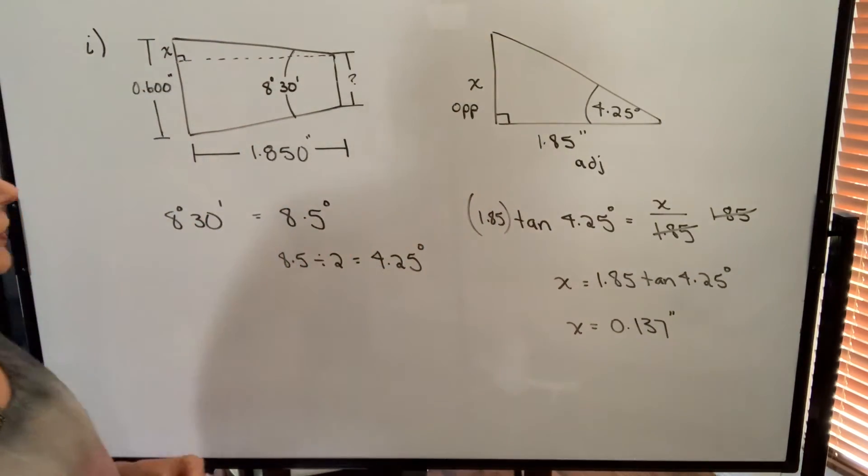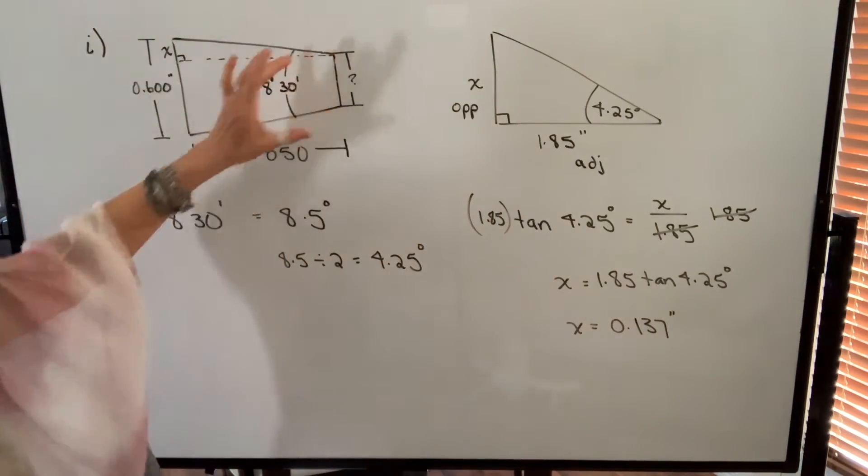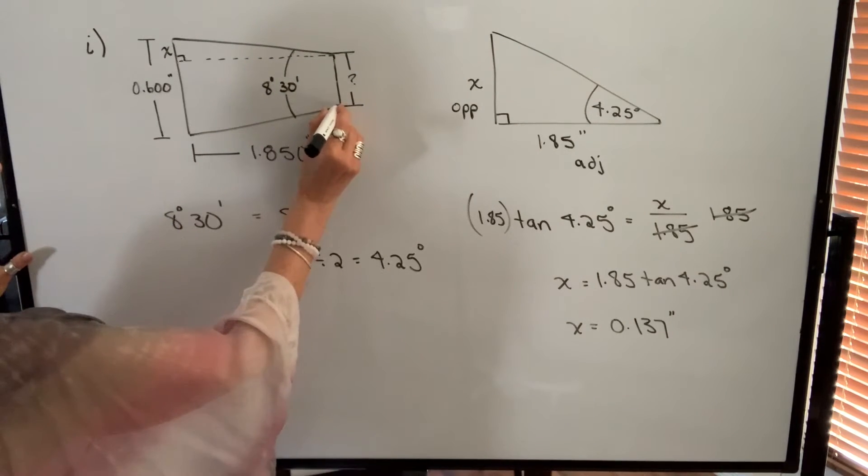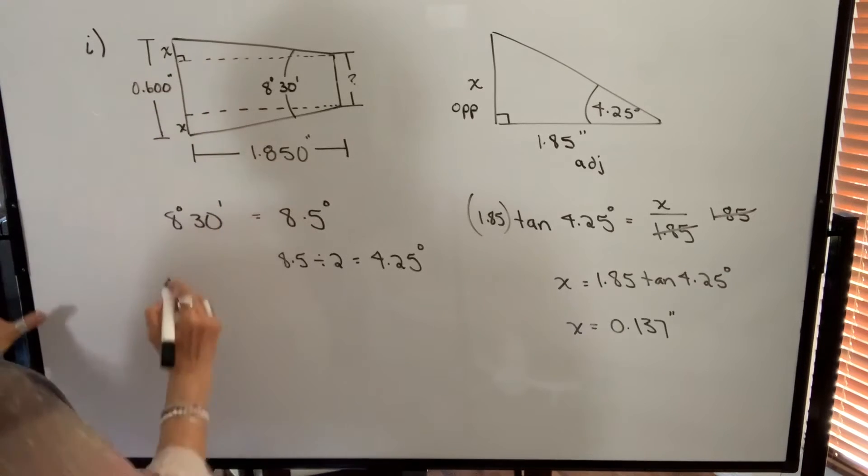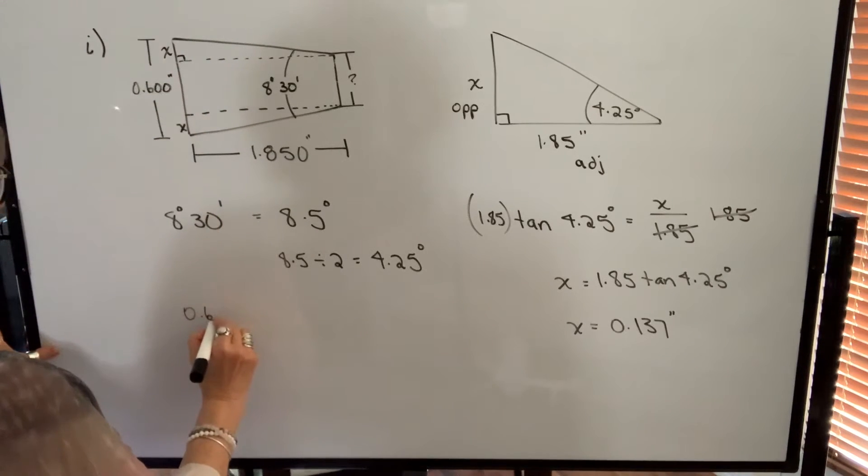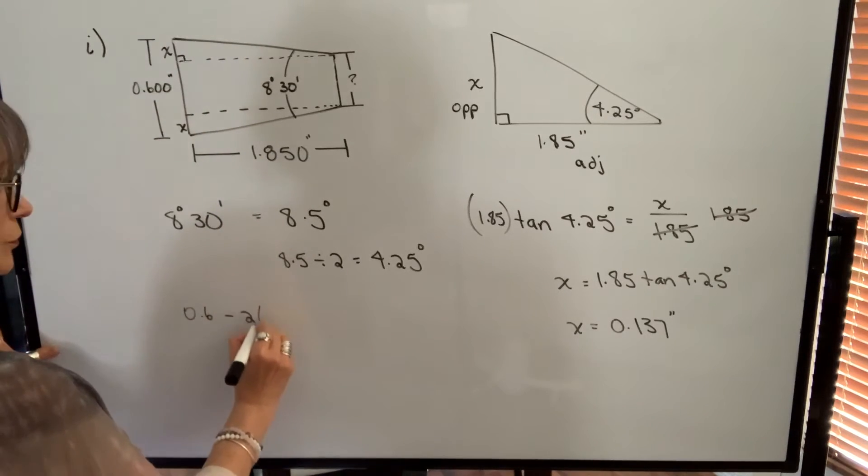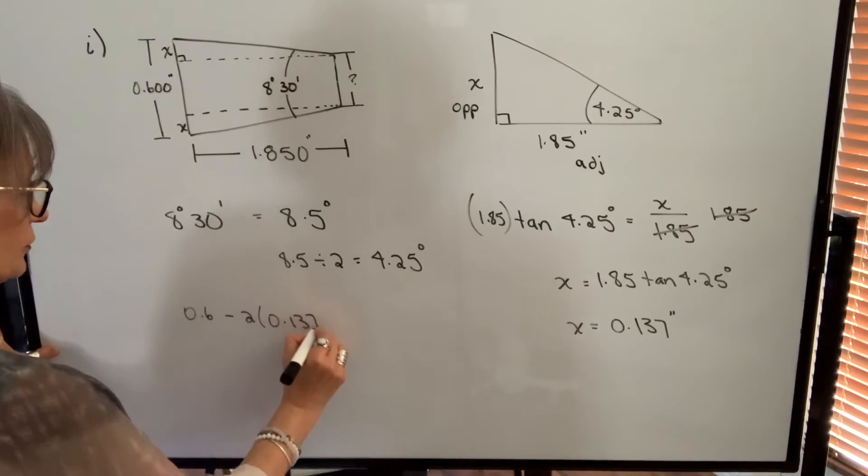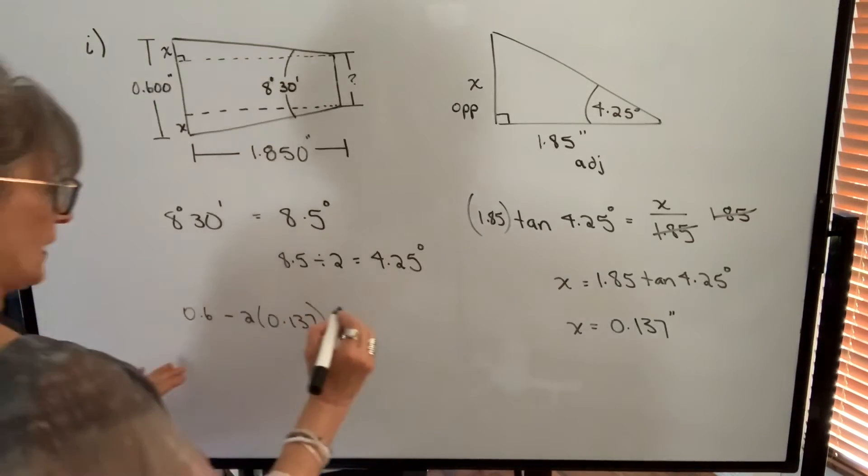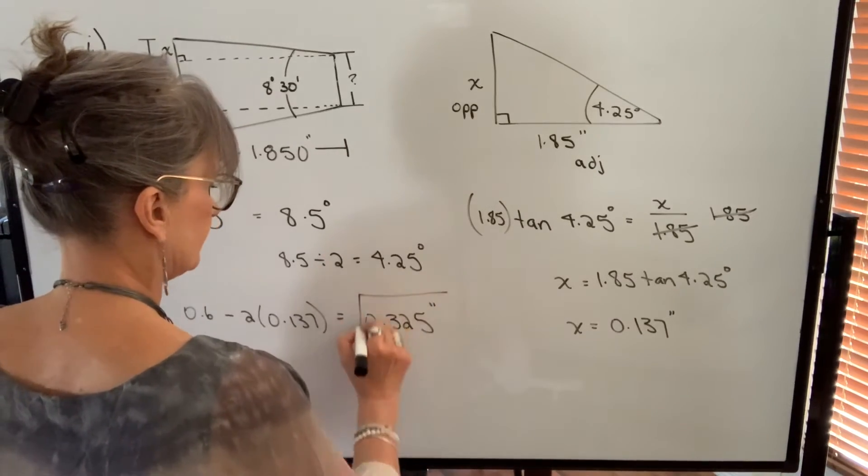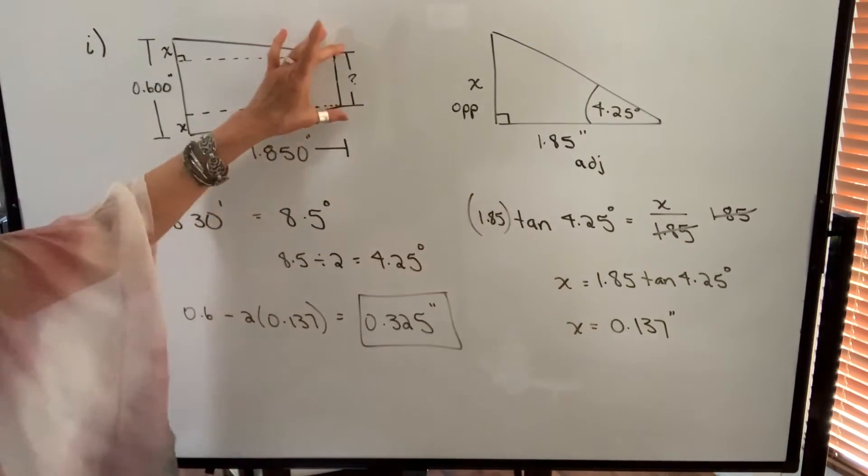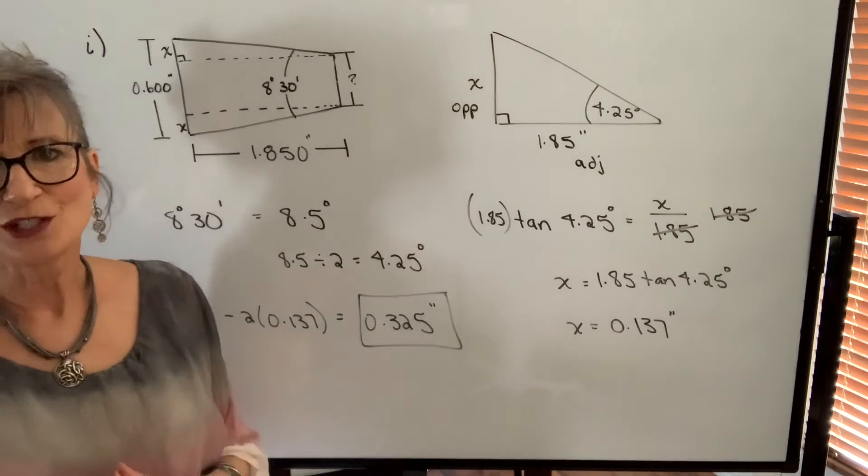Now I'm going to use that value to find this diameter. I know that that value is in the top triangle. It's also going to be the same value here. So if I take 0.6 inches and subtract 2 times 0.137 inches I will get 0.325 inches. So that would be the small diameter for that particular taper.